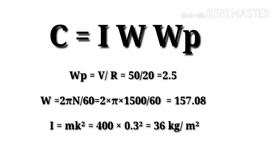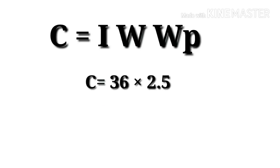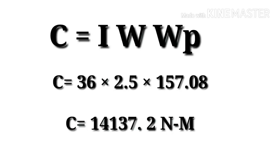The mass moment of inertia I = m·k², where m is the mass of the engine and k is the radius of gyration. Substituting: I = 400 × (0.3)² = 36 kg·m². Now putting all values into C = I·ω·ωp: C = 36 × 157.08 × 2.5 = 14,137.2 N·m. That is the magnitude of the reactive gyroscopic couple.